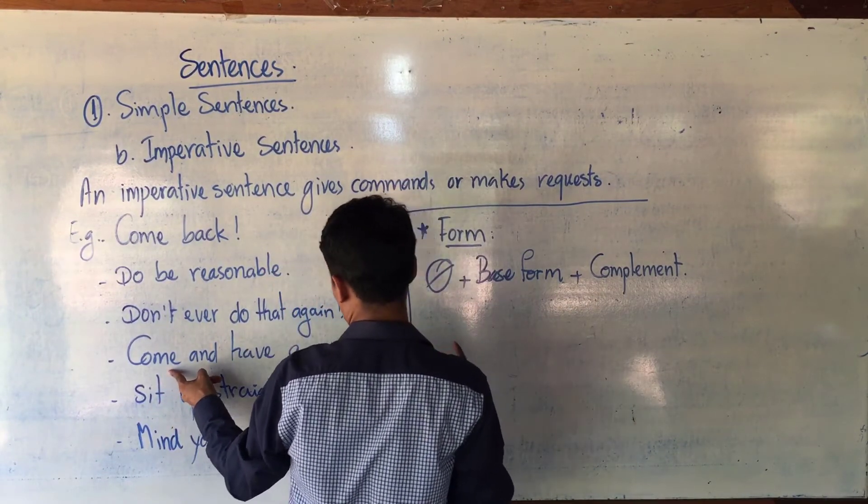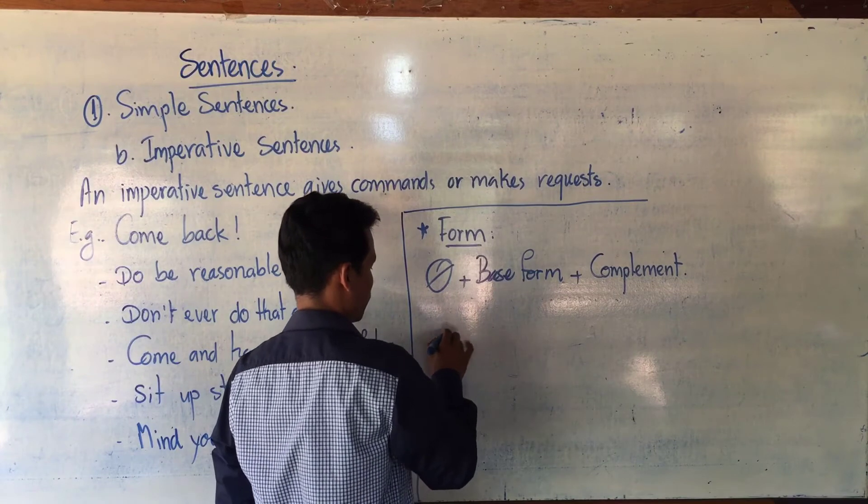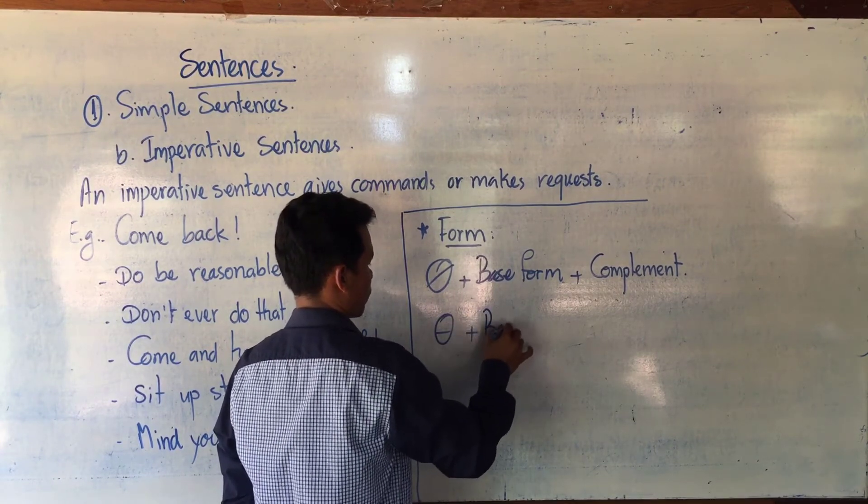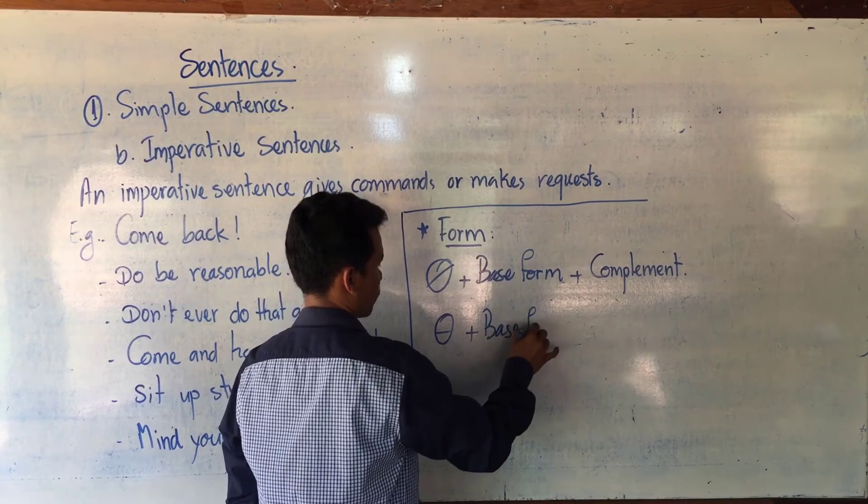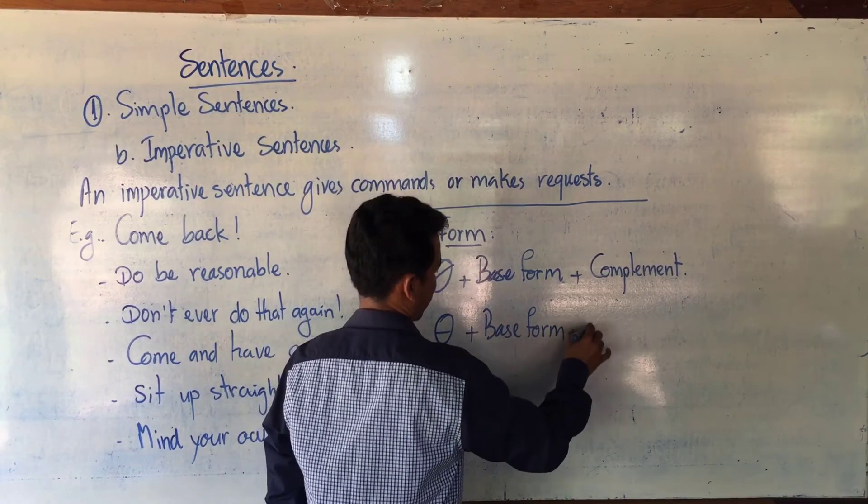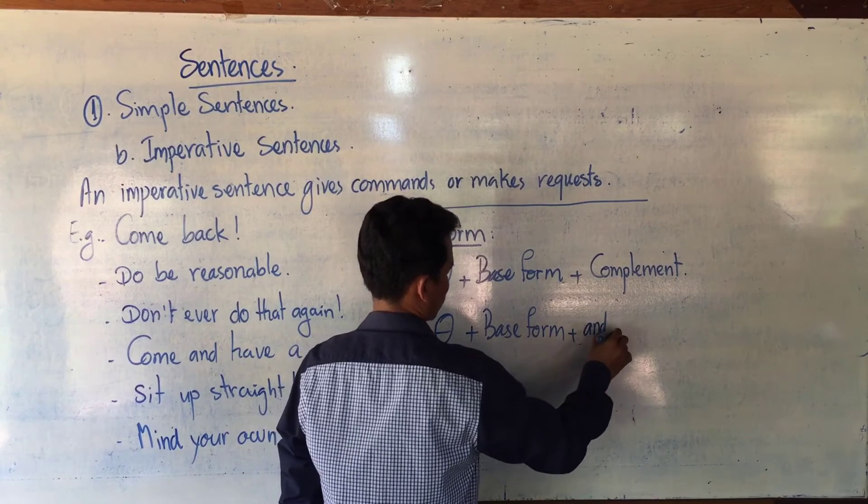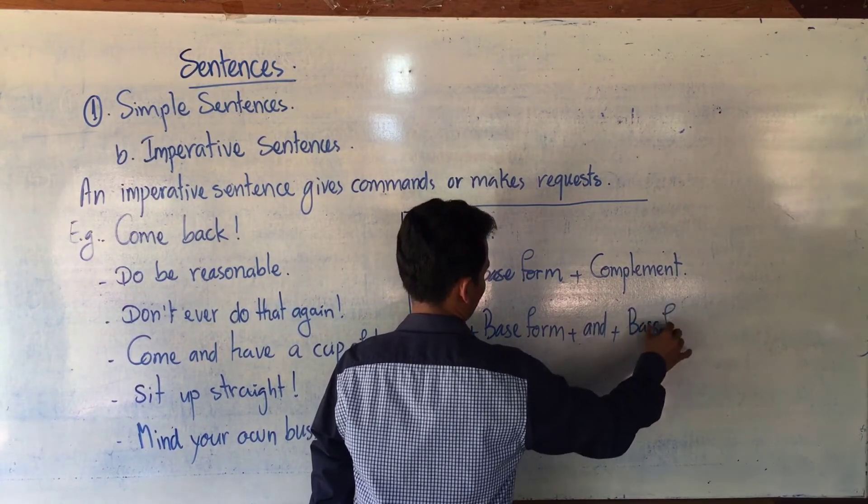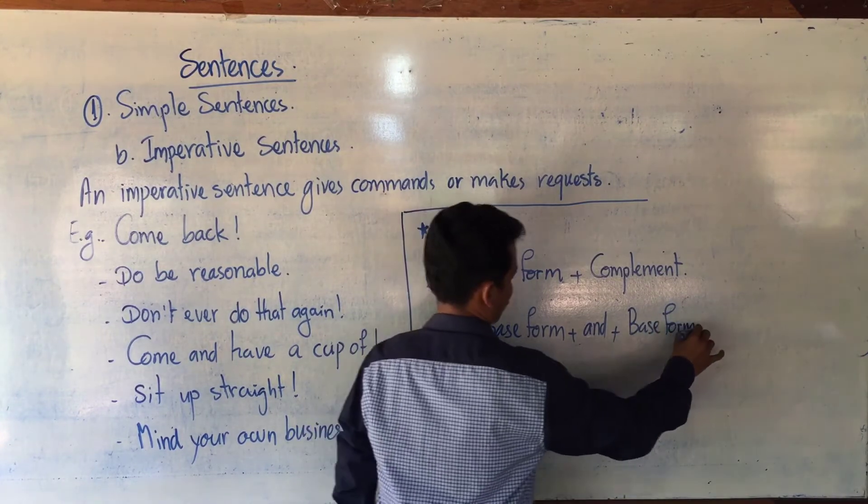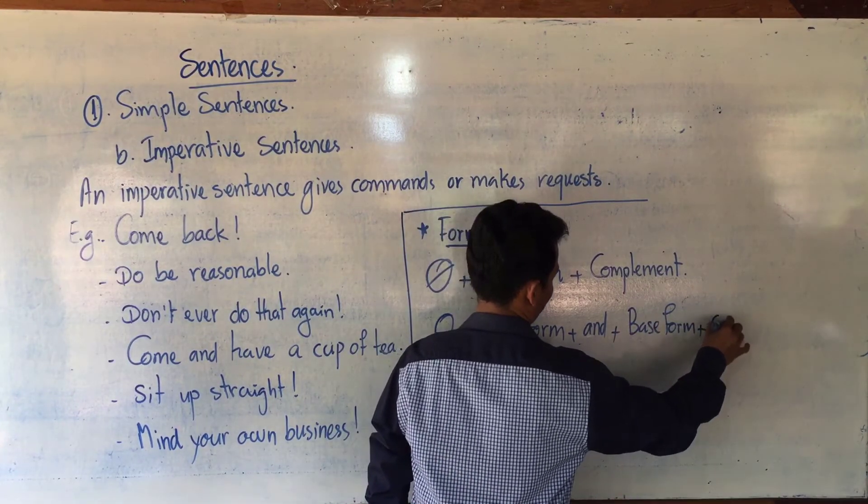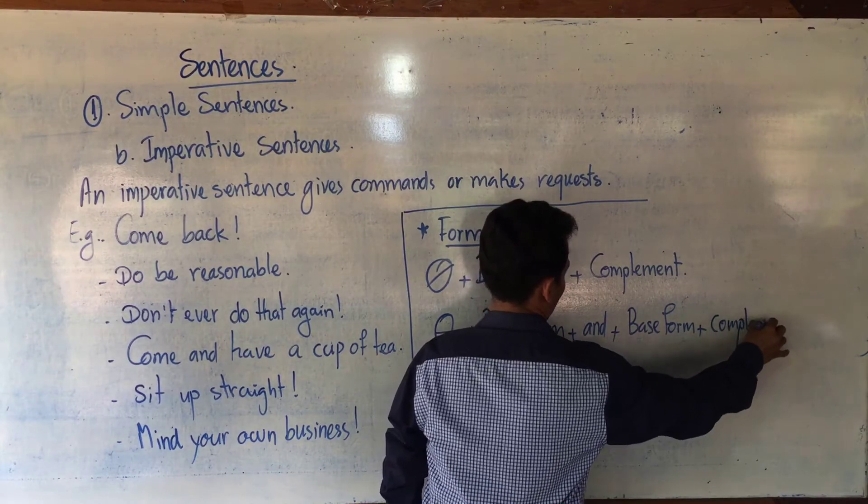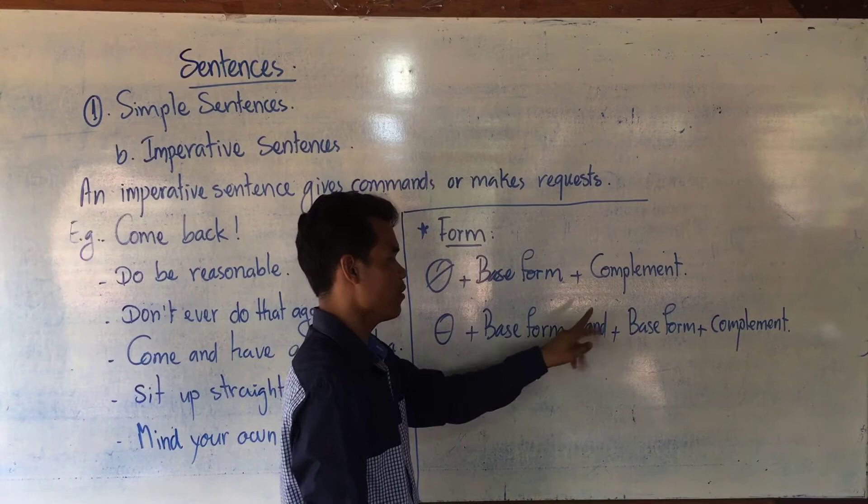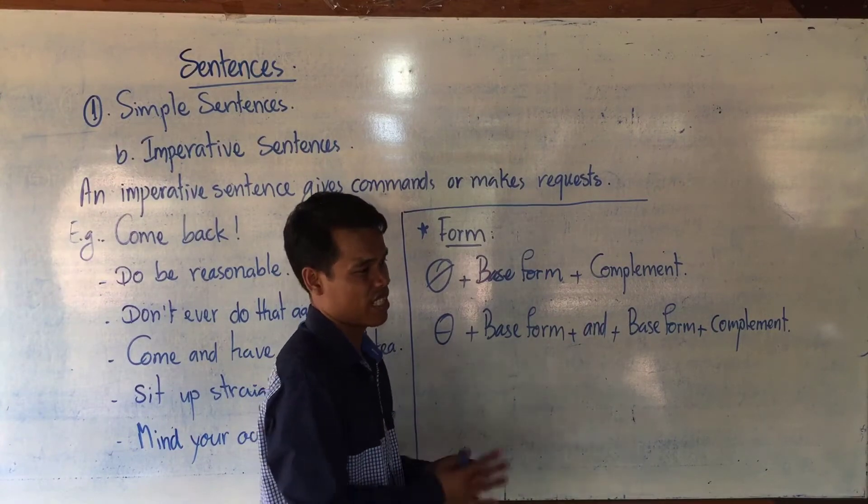Or you can see this one. It is also compound verb. You can write in two ways. Base form and base form complement. In place of and here you can write or, sometimes but, but all is not really common. And but all is also possible.